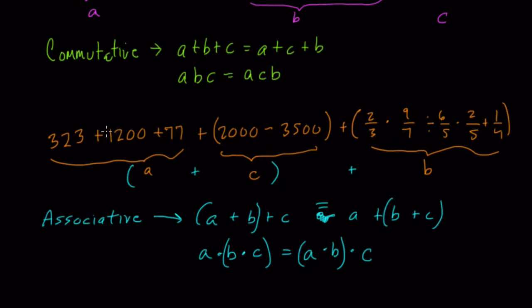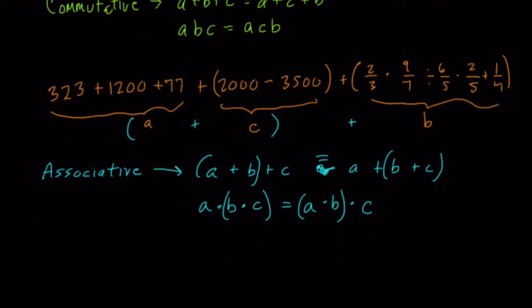So here, what does A equal? Well, if I add up the three terms in A, I get 323 plus 1,200. That's 1,523. Write that down over here. Plus 77. This is all the A term. And that equals 1,600. So this is the A term.